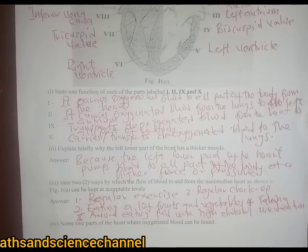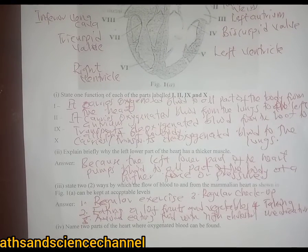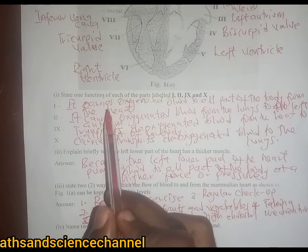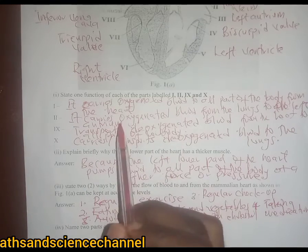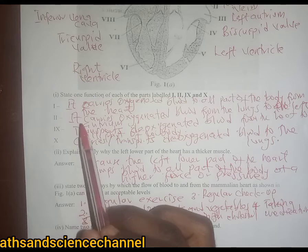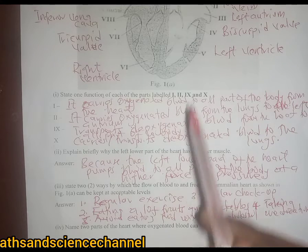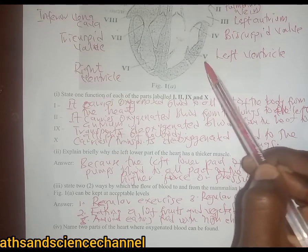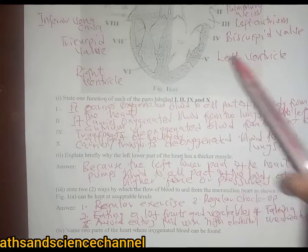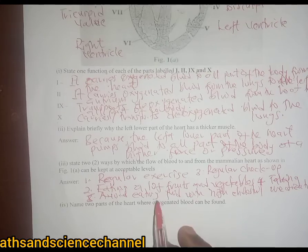The last question asks: name two parts of the heart where oxygenated blood can be found. You realize that when we wrote the functions, we said part i carries oxygenated blood, and part ii also carries oxygenated blood. Looking at the whole heart, we can find oxygenated blood at part ii, the left atrium, and part v, the left ventricle.